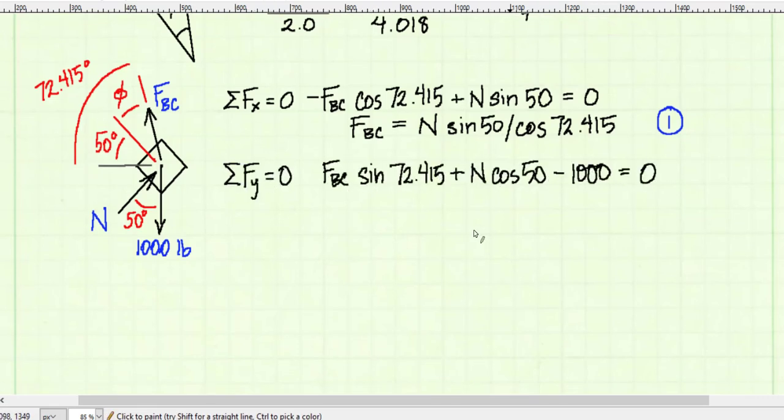Summing forces in the y-direction, I get force BC's vertical component, which is FBC times the sine of 72.415 degrees, plus the component from the normal force, also pointing up, times the cosine of 50 degrees, and then minus the weight, 1,000 pounds, all equal to 0.